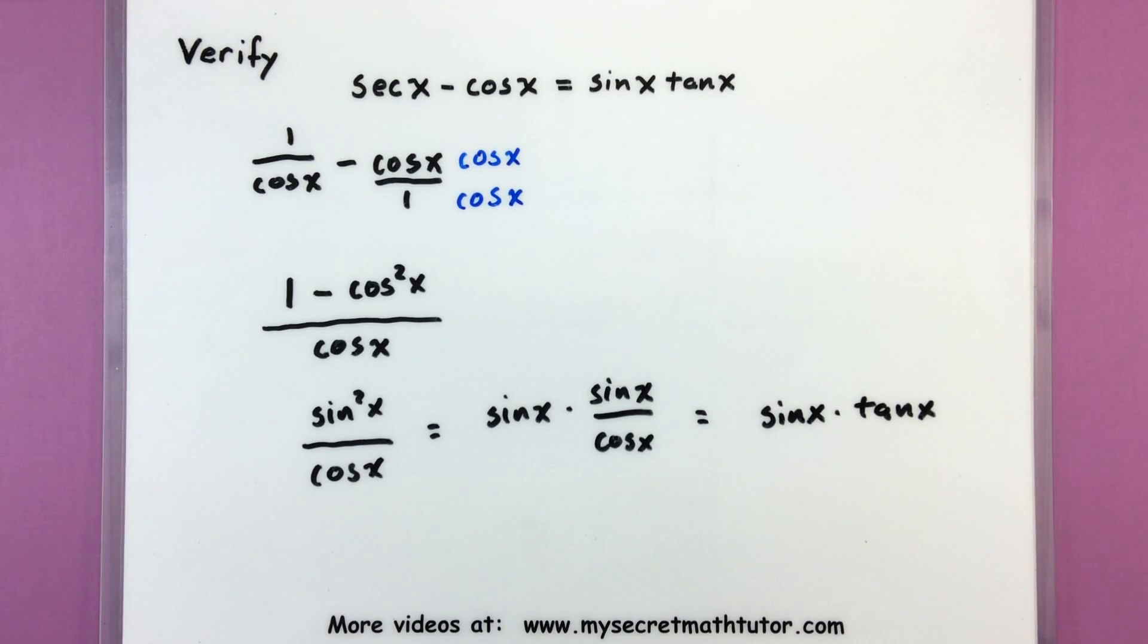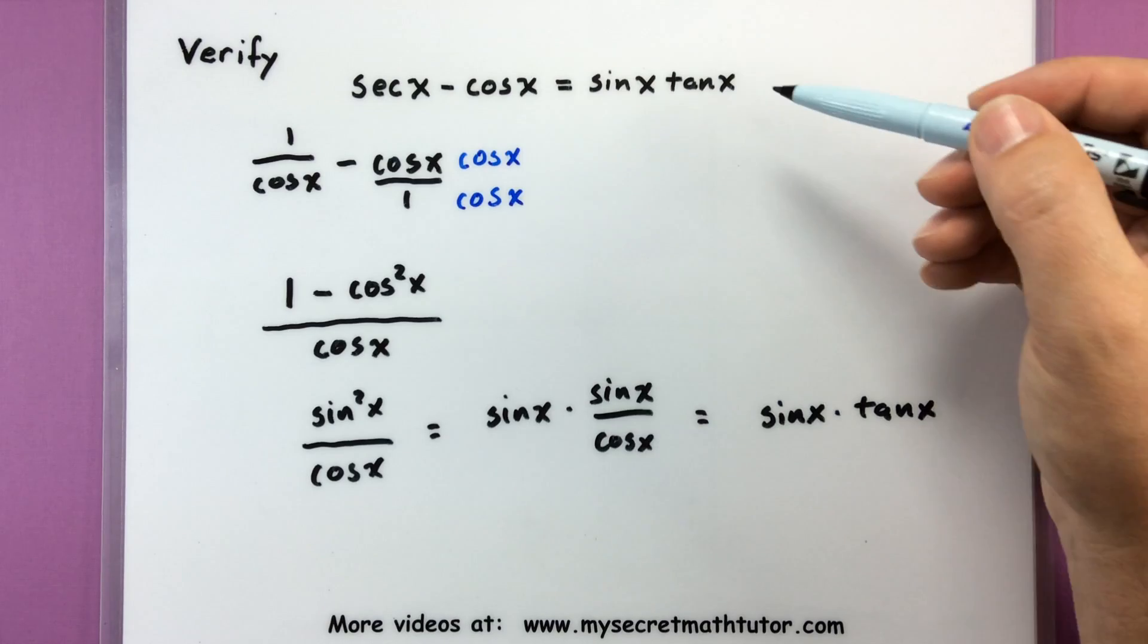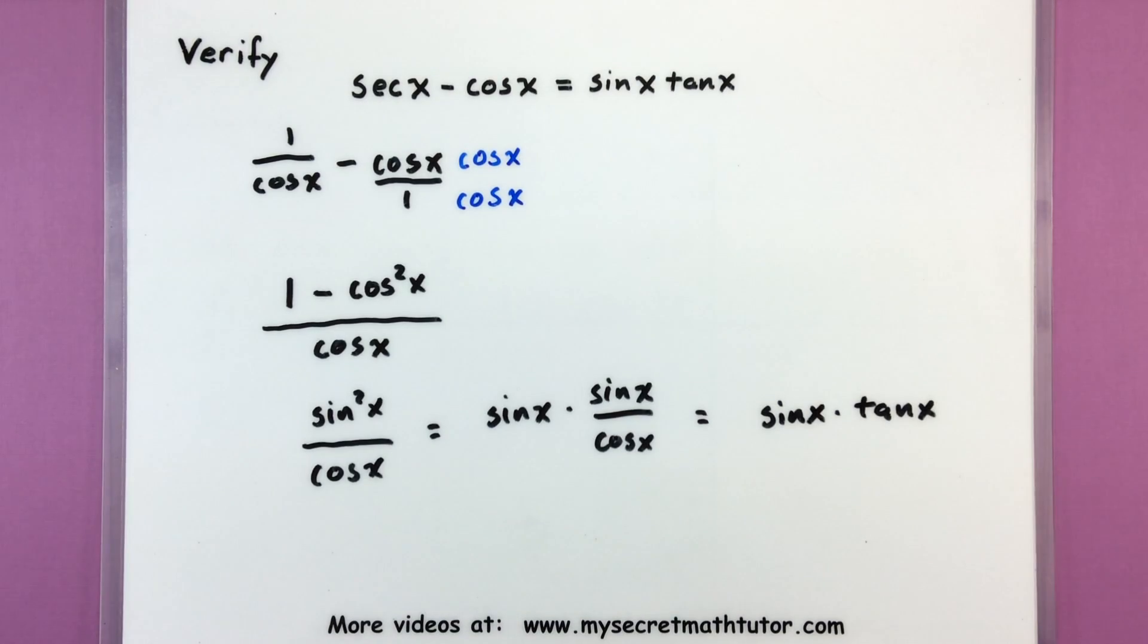So notice how along the way it's not really clear what step I should do next but I'm just trying a few different things to manipulate it and get it a little bit closer to the right side. I'm always checking the right side trying to get clues maybe how I should change it or which direction I'm going.